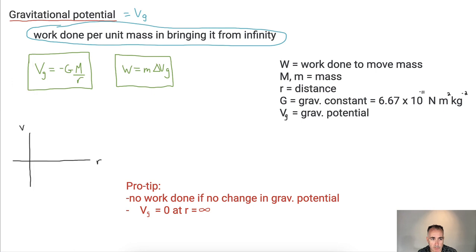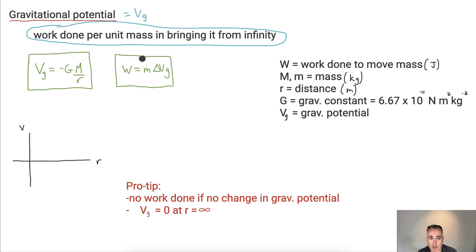Looking at the units: work done is in joules. M is mass in kilograms. R is distance in meters. Gravitational potential V-G has units of joules per kilogram — you can derive this from V-G equals W over M. Sometimes you can use the equations themselves to figure out the units.